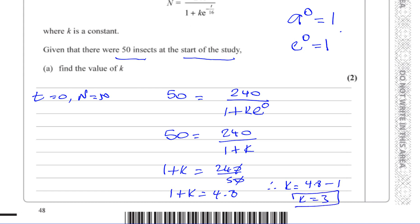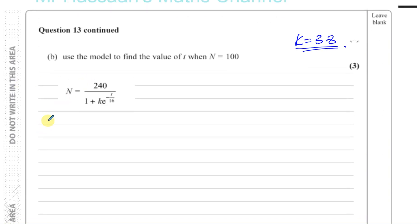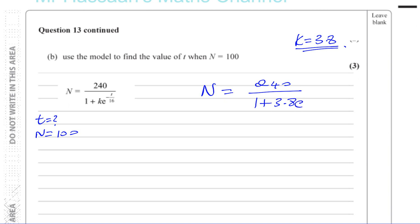That's part A done. Part B says: use the model to find the value of t when N equals 100. We now know k equals 3.8, which is a constant, so its value stays the same. N and t are variables. The formula is N equals 240 over one plus 3.8 e to the power of minus t over 16. The 3.8 is fixed, but N and t depend on each other.